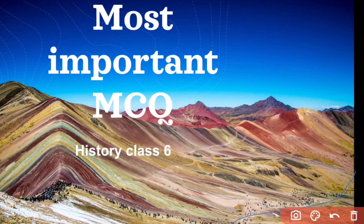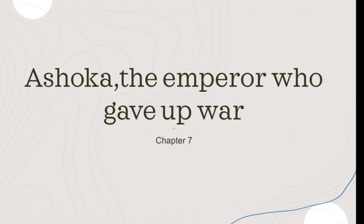Hello friends, what are you doing? Today we are going to talk about the most important MCQs of History Class 6, Chapter 7 — Ashoka the Emperor who gave up wars. So let's start our video.